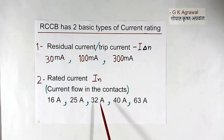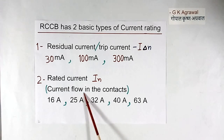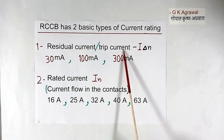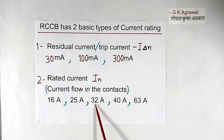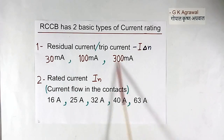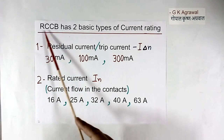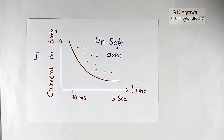You can select combinations — for example, a 30 mA trip current with 25 A rated current, or 30 mA trip current with 32 A rated current. Today we will not discuss rated current; we will discuss the residual current. This is the residual current — when this flows in the RCCB, the breaker will trip. The RCCB circuit breaker is used to protect the human body from electrical shock.